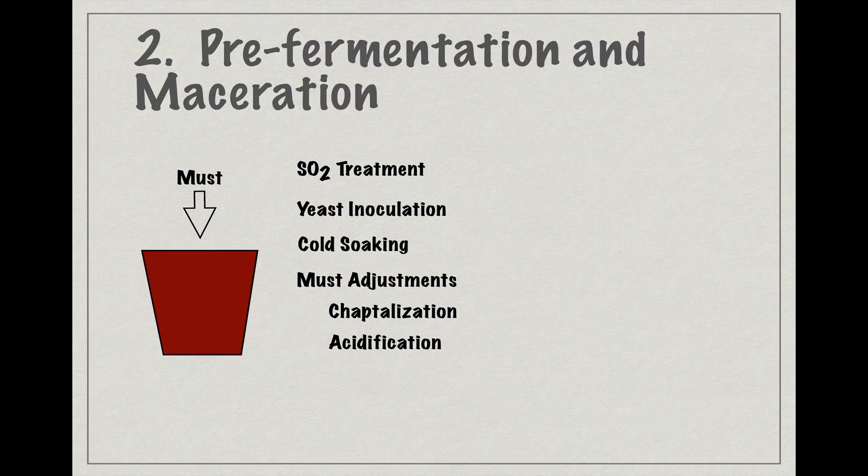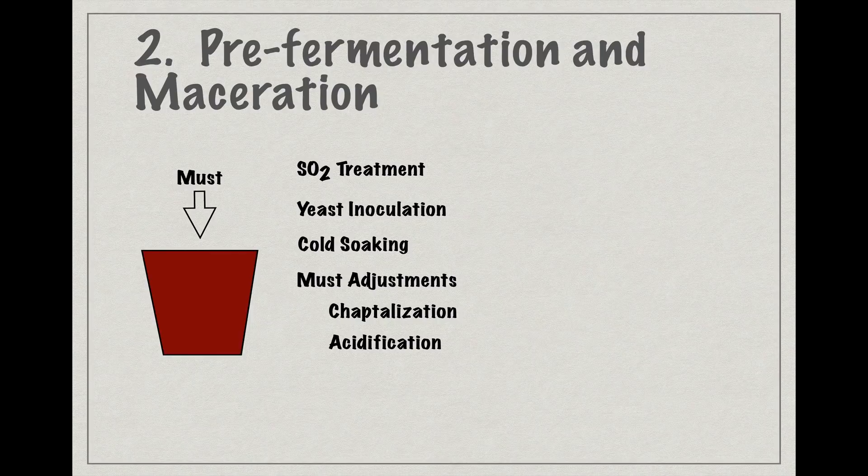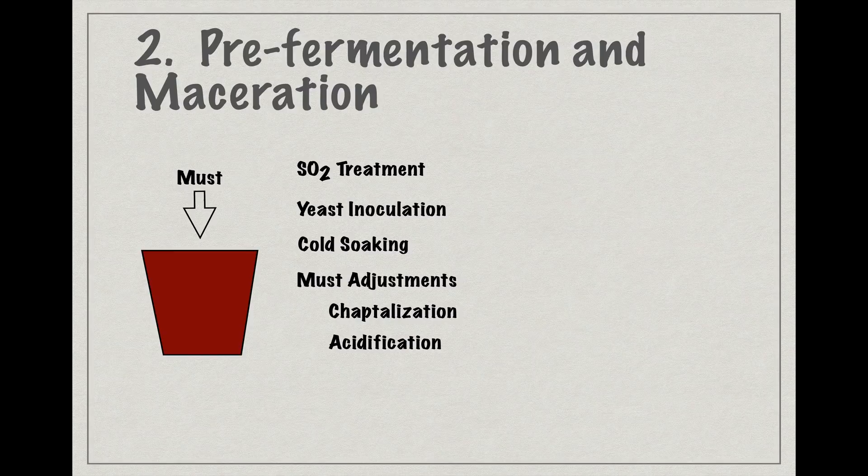If a winemaker is looking to make a wine using yeast that came in with the grapes or is naturally ambient in the winery, then she may just let the wine do its thing and start fermenting. But natural or wild yeast can be unreliable and quirky, and many winemakers prefer to work with a commercially produced yeast strain that gives more consistent outcomes.